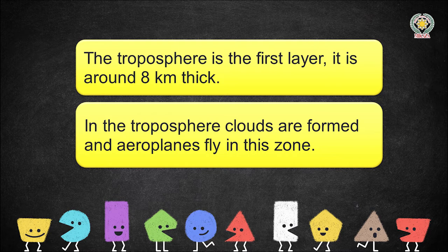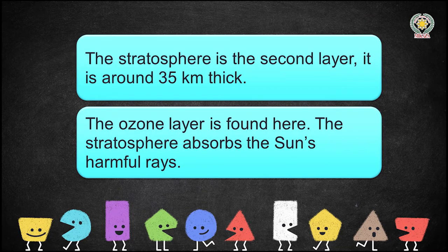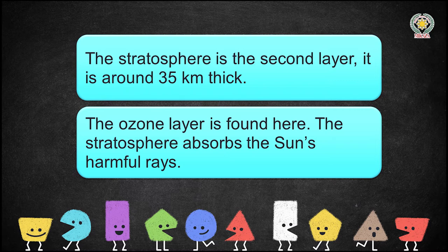The second layer is the stratosphere. The troposphere is eight kilometers thick, and the stratosphere is around 35 kilometers thick. In the stratosphere, the ozone layer is found.